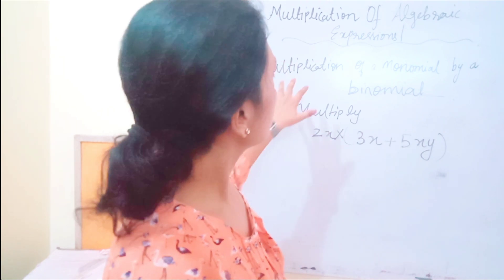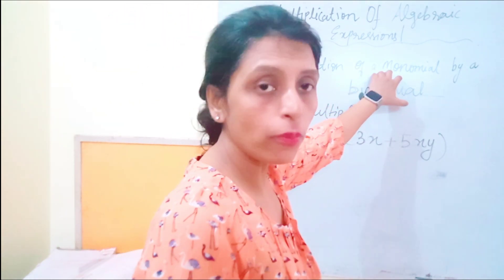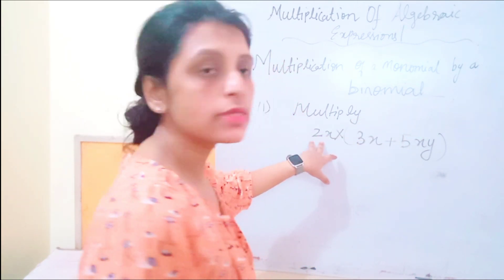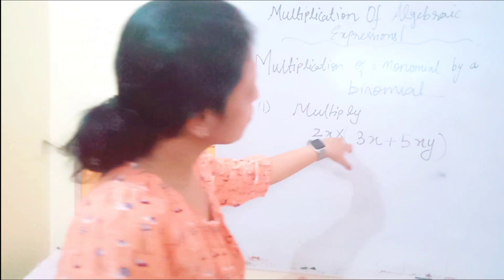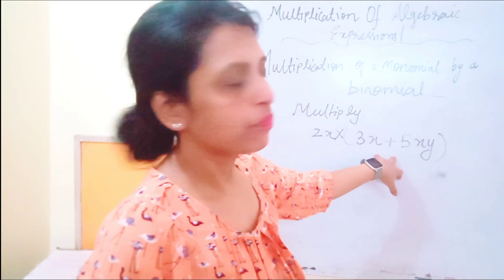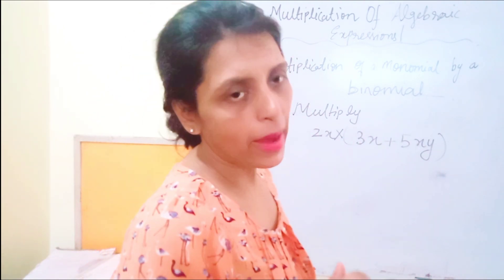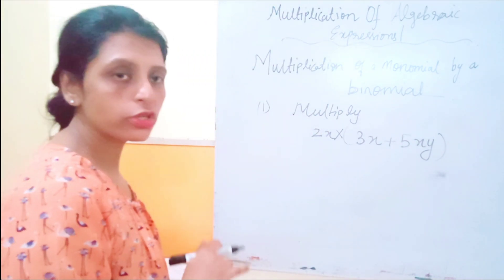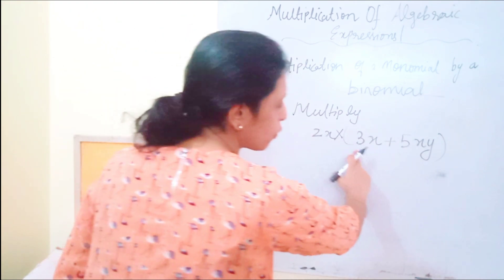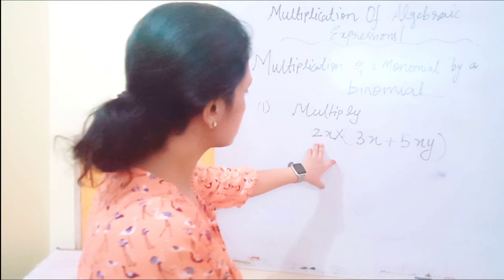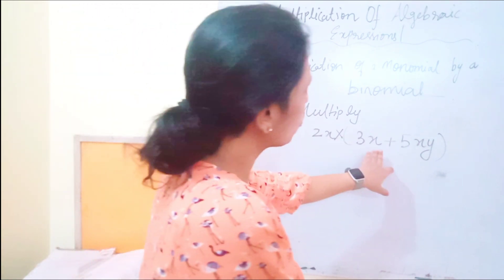The answer is minus 4p to the power 6. Now I am going to tell you the multiplication of a monomial by a binomial. A monomial means a single-term algebraic expression, and a binomial is an algebraic expression that contains two terms. Here the monomial 2x is multiplied with the binomial 3x plus 5xy.